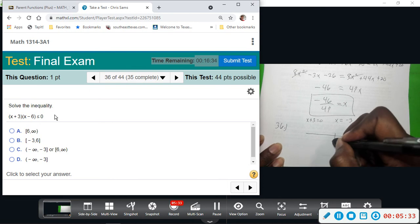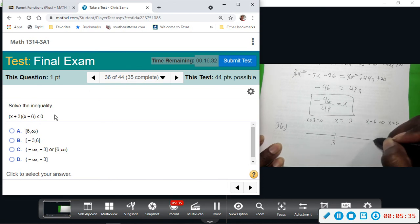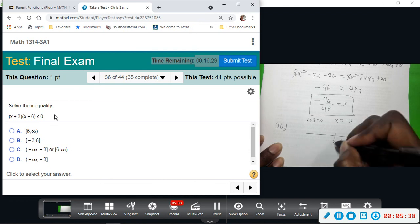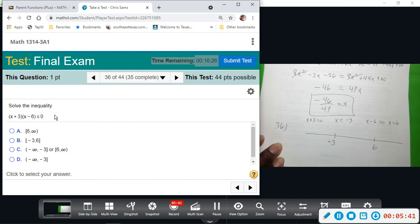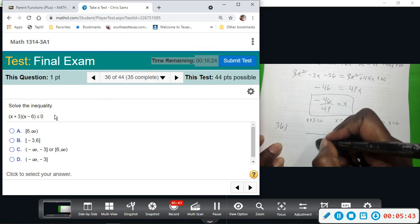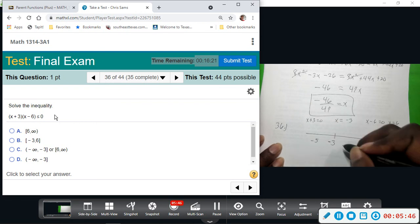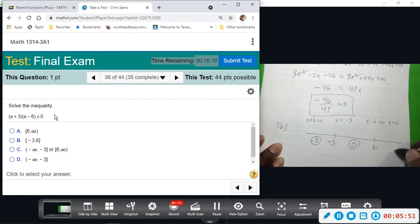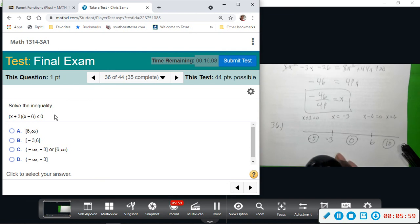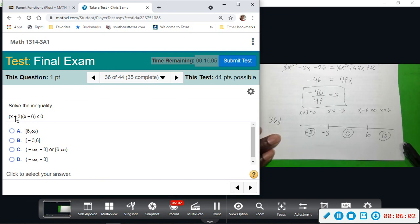On the number line we would have negative 3 and then we would have positive 6. And we're going to pick values in between. So let's just use negative 5 here, then I'm going to check in between these, I'll pick 0, and to the right of this I'll pick 10. So I'm going to be plugging these numbers in or imagining plugging them in to this expression. And I want to multiply those two numbers and see if I get less than 0. And if I get less than 0 it's true, if I don't it's false.